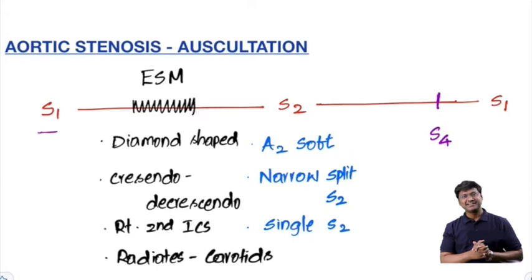But in the systolic phase, between S1 and S2, you have ejection systolic murmur or mid-systolic murmur. The character of this ejection systolic murmur is diamond-shaped, crescendo-decrescendo, and it is heard in the second right intercostal space that radiates to the carotids.